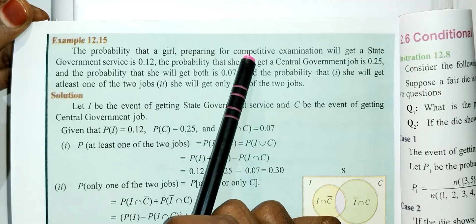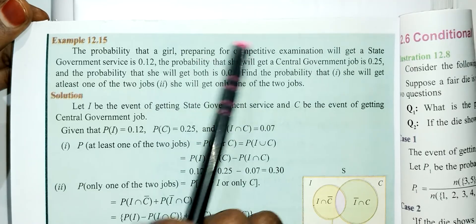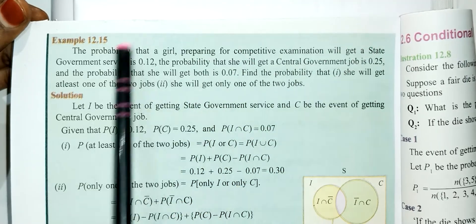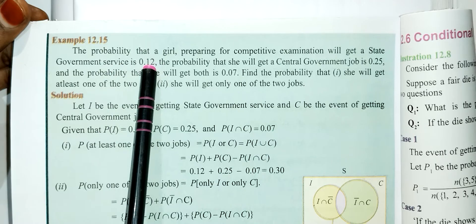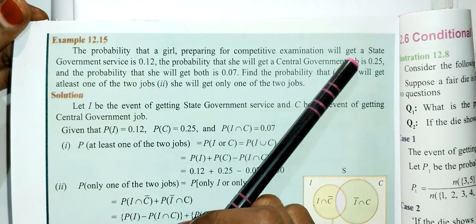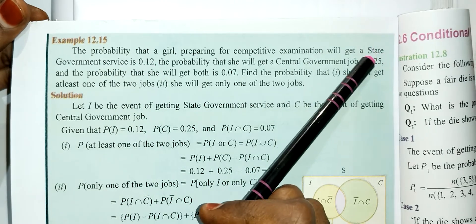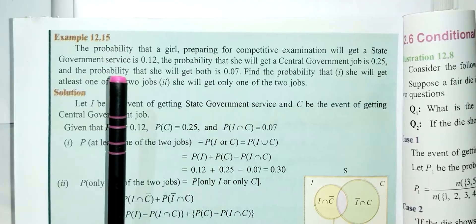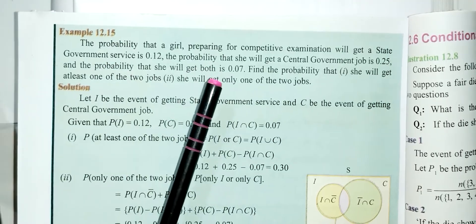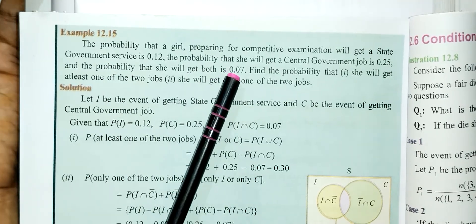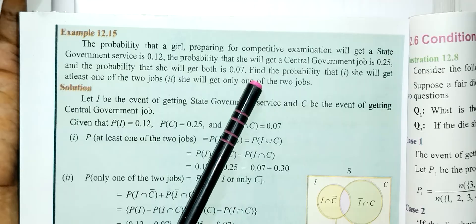So, a girl preparing for a competitive exam. State government service probability is 0.12, central government is 0.25, and the probability of getting both of them is 0.07.